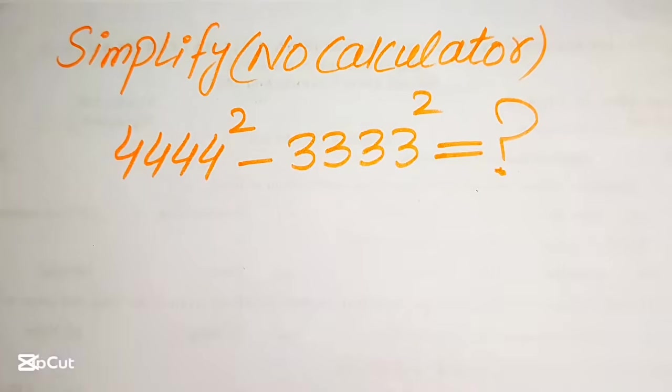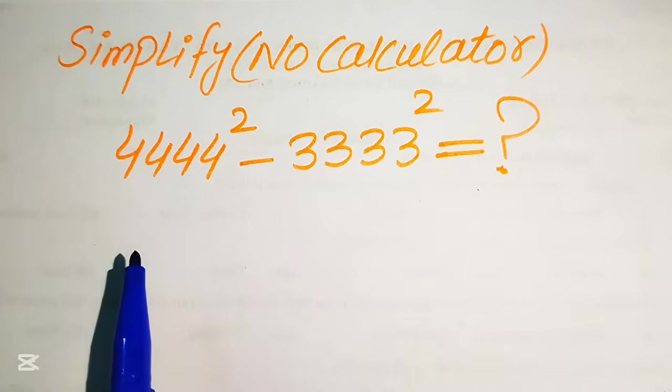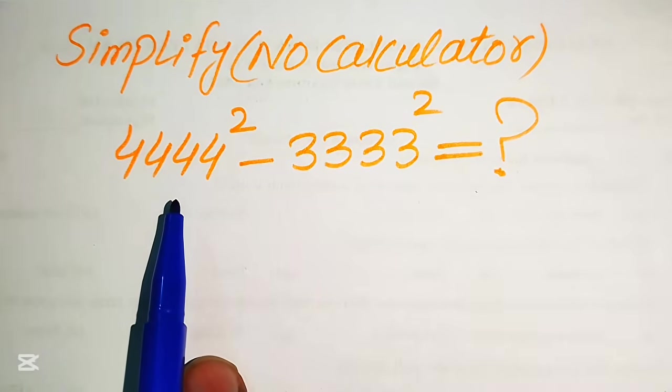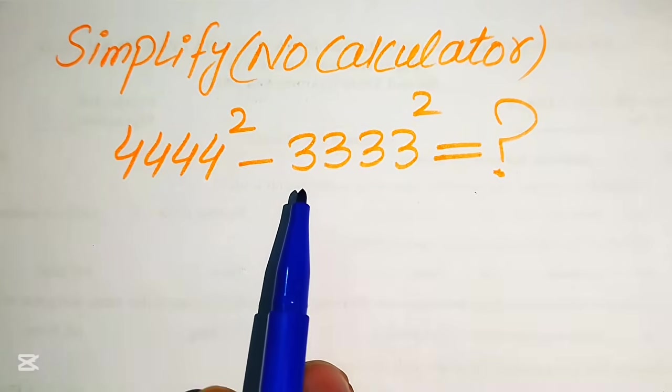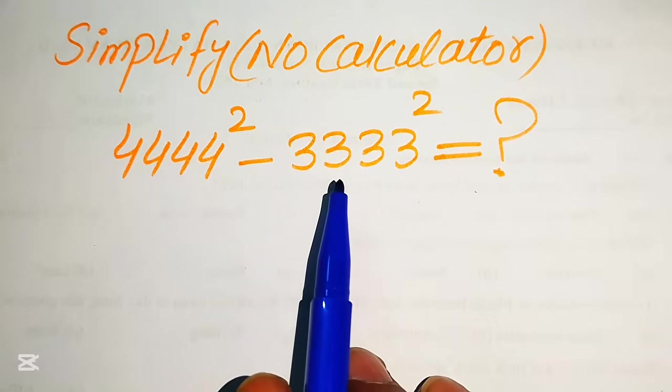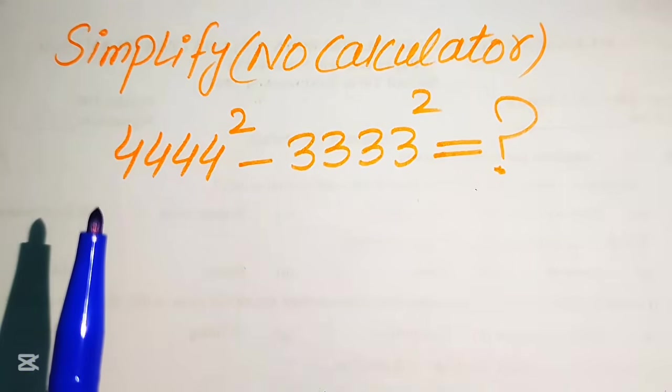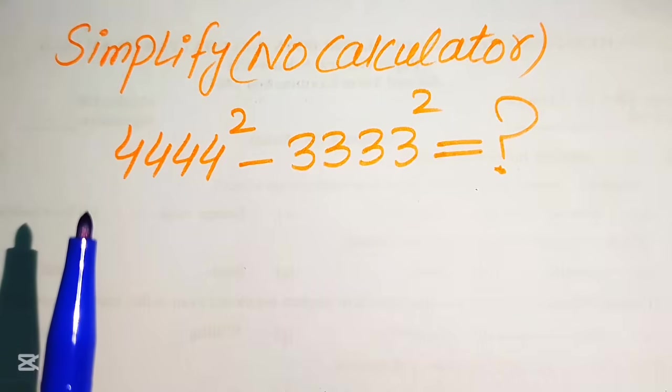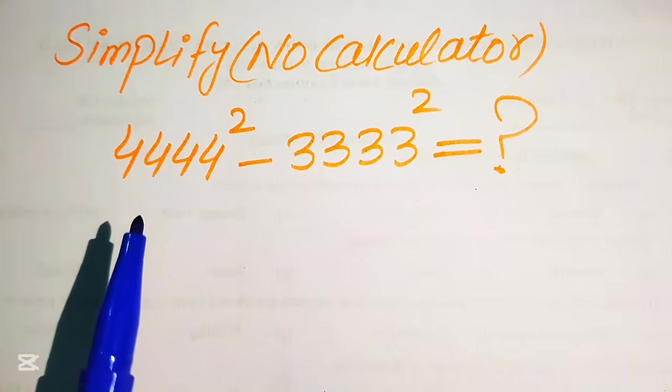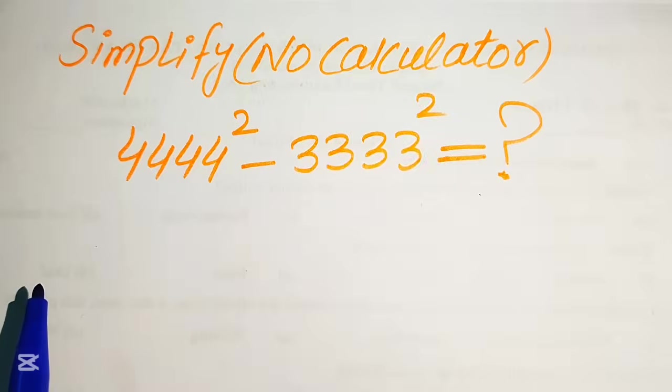Hello everyone, how to simplify this nice algebraic expression. If we have 4444 square minus 3333 square, we write this algebraic expression into the simplified form. Here you remember one thing is that a calculator is not allowed in this problem, it means that we will show all of the work here.